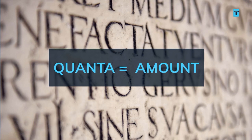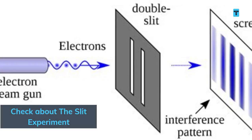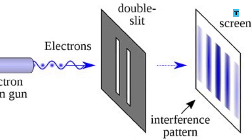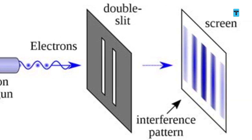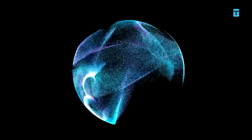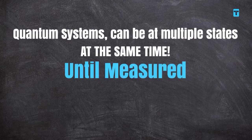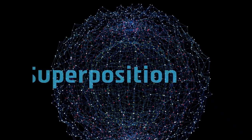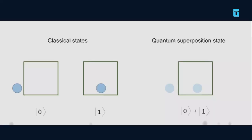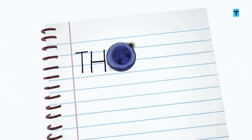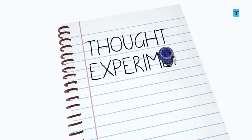Quanta means 'amount' in Latin. In quantum mechanics, a tiny object like an electron can be either a wave or a particle. In the quantum world, until we look and check for ourselves, we can't know for sure — hence both states are possible. This is called particle-wave duality. Quantum systems can be in multiple states at the same time until measured — this is called superposition. Any two quantum states can be added together, or superposed, and the result will be another valid quantum state.